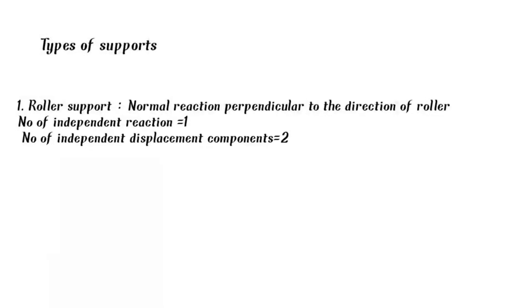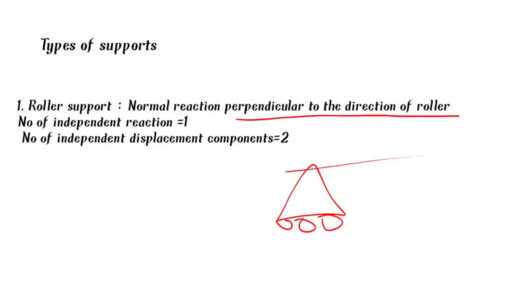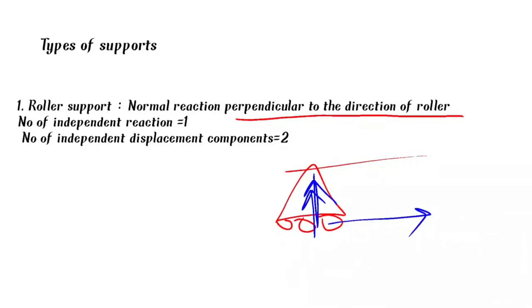Next, types of supports. First, roller support. In a roller support, the reaction is normal — perpendicular to the direction of the roller. The reaction is perpendicular to the direction of the roller.